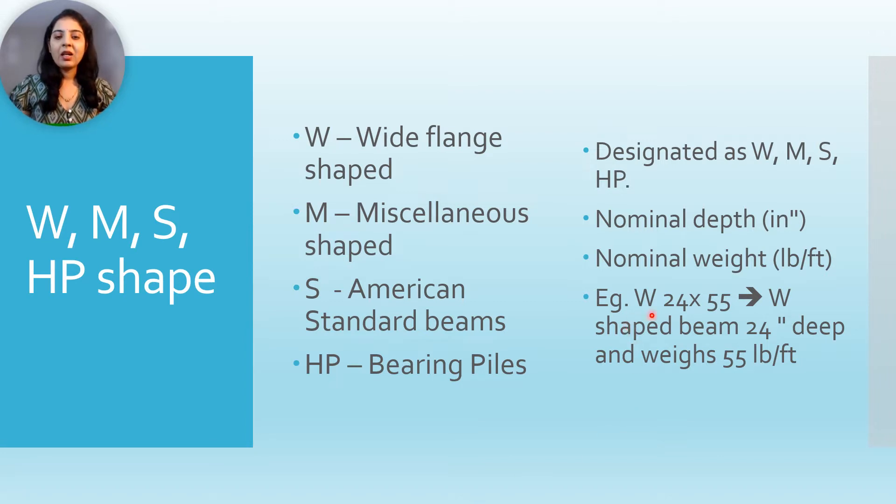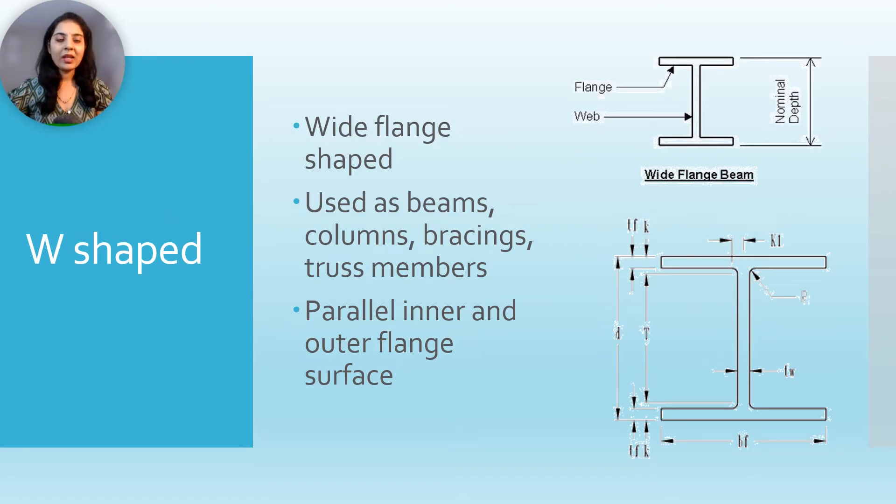They are designated as, for example, W 24 by 55 - that means W shape beam 24 inches deep and it weighs 55 pounds per feet. Now we will see them one by one. W shape, that is wide flange shape.